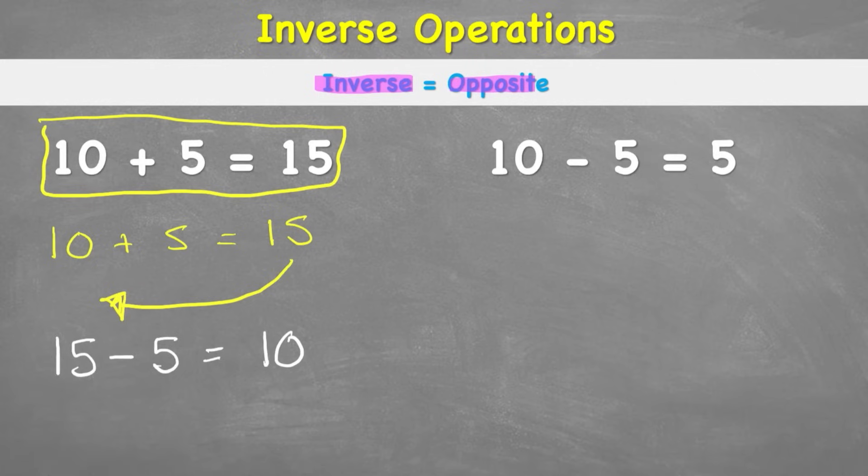Hopefully you can see that is the same question just written backwards but with the inverse operation. We had addition, now we have subtraction. Both of these number sentences give us the correct answer because 10 plus 5 equals 15 and 15 subtract 5 equals 10.